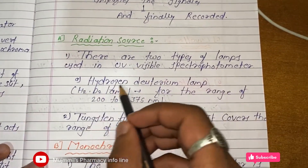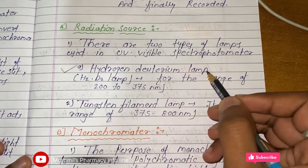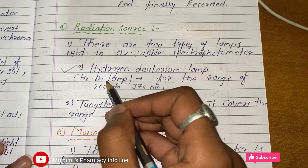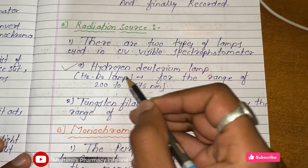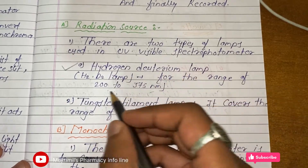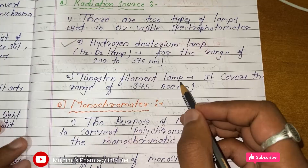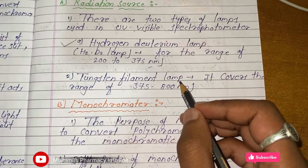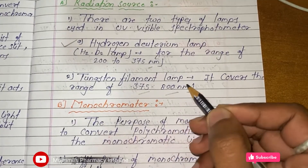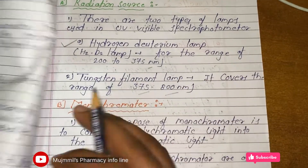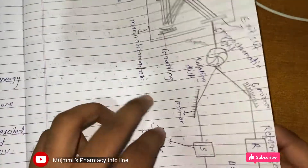There are two types of lamps used in UV-Visible spectrophotometers. First, the hydrogen-deuterium lamp (H₂D₂ lamp), which covers the range of 200 to 375 nanometers. Second, the tungsten filament lamp, which covers the range from 375 to 800 nanometers. You should draw diagrams of these bulbs individually in your exam.